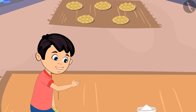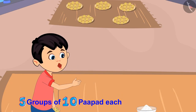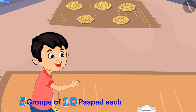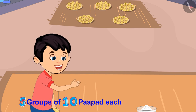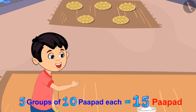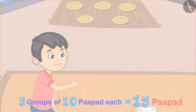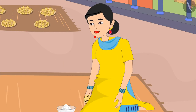Chotu replies: Mother, I have kept 5 groups of 10 papad each, which means a total of 15 papad under the sun. No, Chotu, you are counting wrong.